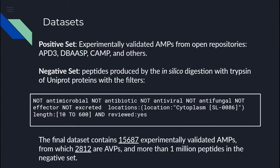The first step in the development of the model was gathering sequence data about the peptides. For the positive set, we gathered experimentally validated AMPs from open repositories such as APD3, DBASP, CAMP, and others. For the negative set, we used peptides produced by the in silico digestion with trypsin of UniProt proteins, with filters for not toxic, not effector, not excreted, etc. The intention behind these filters is to guarantee that no peptide in the negative set will be an AMP of any functional type.